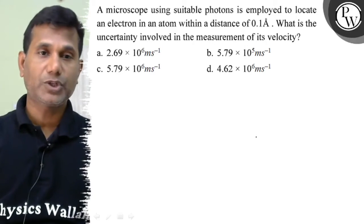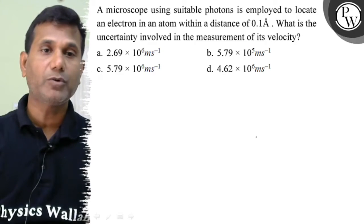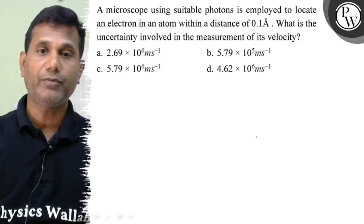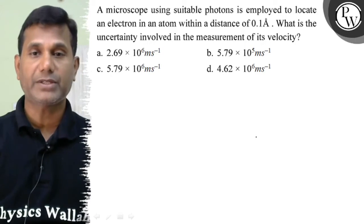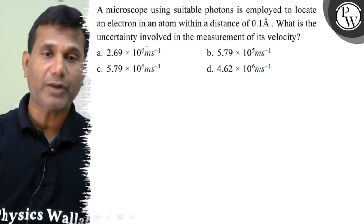Hello Gacho, let us see this question. A microscope using suitable photons is employed to locate an electron in an atom within a distance of 0.1 angstrom. What is the uncertainty involved in measurement of its velocity?